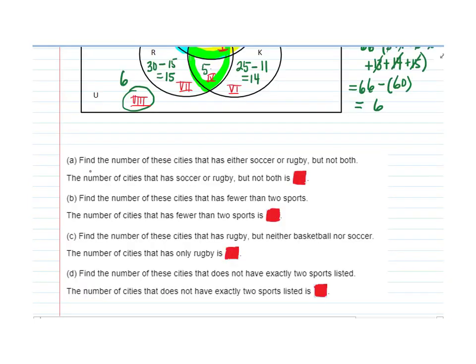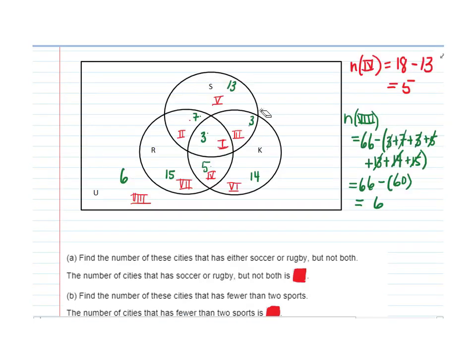So now we answer the questions. A. Find the number of cities that has either soccer or rugby but not both. Soccer or rugby but not both. Soccer is the S circle. Rugby is the R circle. We're going to include everything that's in soccer or rugby but not both.